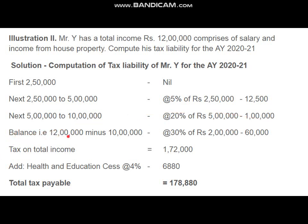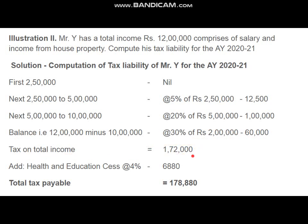The balance amount: total income is 12 lakh, and we have already computed tax up to 10 lakh. So 12 lakh minus 10 lakh — that additional 2 lakh — is taxable at the rate of 30 percent, giving a tax amount of 60,000. So tax on total income is 1 lakh 72,000.